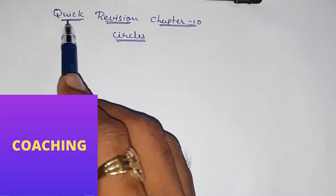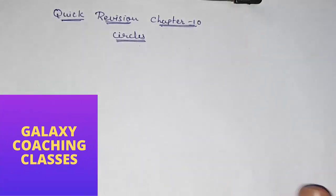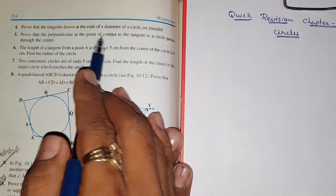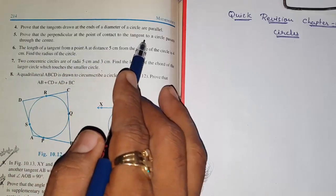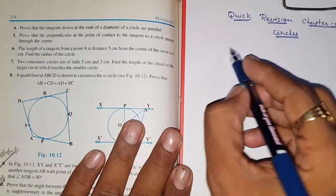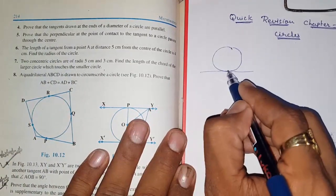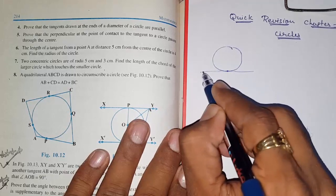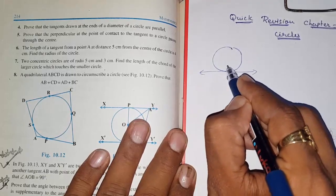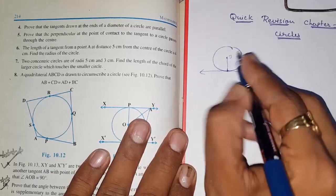Hello friends, this is Part 2 of quick revision of Chapter 10, Circles. Let us start with Question 5: Prove that the perpendicular at the point of contact to a tangent to a circle passes through the center. Since they are saying that if from the point of contact I draw a perpendicular line, it should pass through the center.